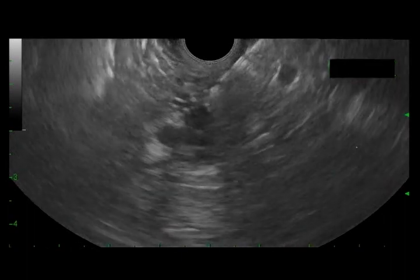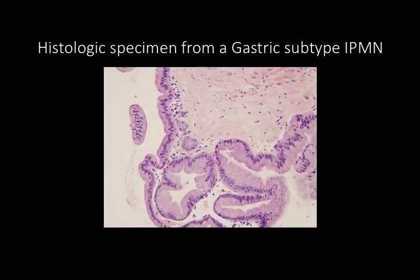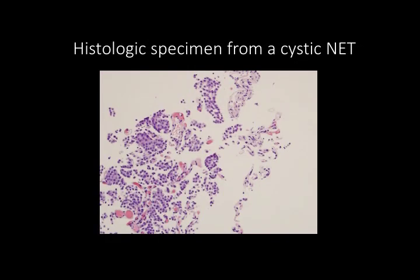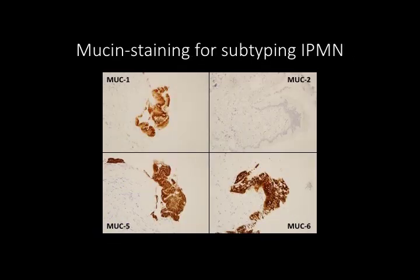The tissue bites are often adequate for histologic evaluation. Here is an example of a histological specimen from a gastric subtype IPMN, a histologic specimen from a serous cyst adenoma, and a histological specimen from a cystic neuroendocrine tumor. For IPMNs, the tissue sample is often adequate for mucin staining for subtyping.